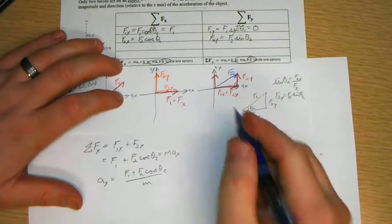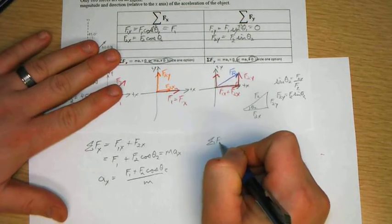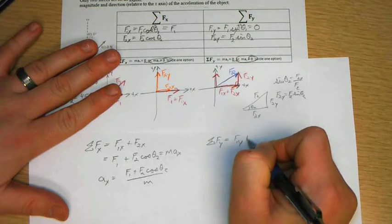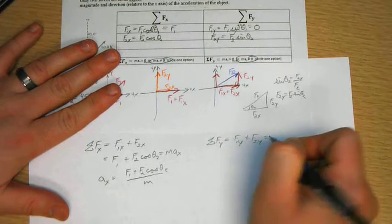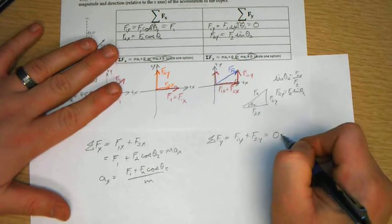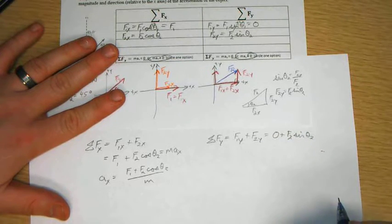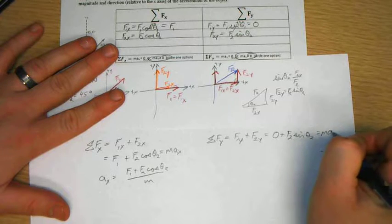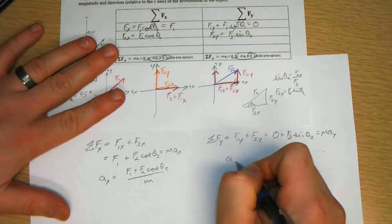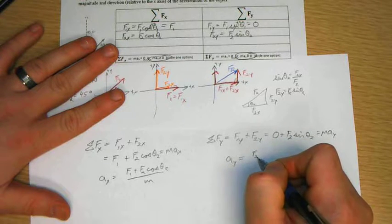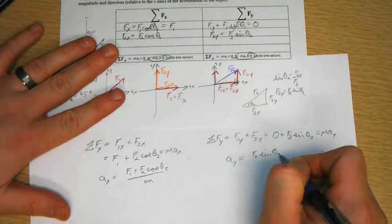If I go over to the y-side, the sum of the forces in the y-direction equals F1y plus F2y, which is equal to 0 plus F2 sine theta 2. And of course, that equals m times ay, so the acceleration in the y-direction equals F2 sine theta 2 over m.